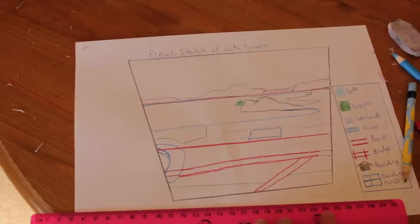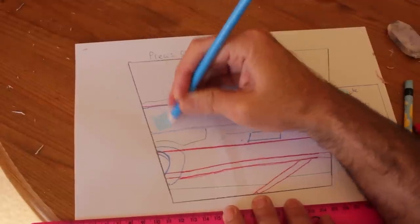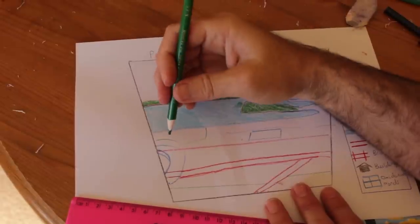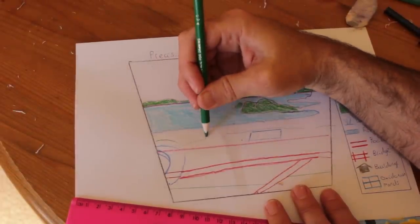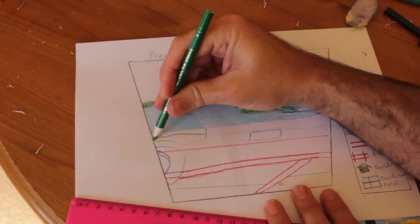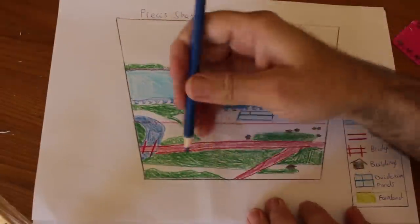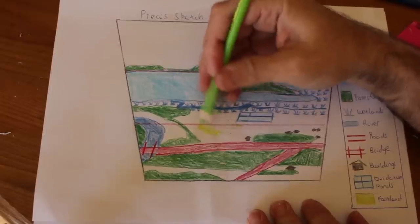Now we're ready to start coloring in our different features. So first let's start coloring in our lake. Now to finish our coloring in, we're ready to get our light green and start shading in our farmland.